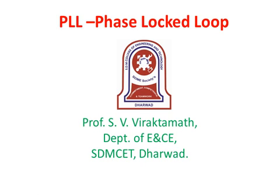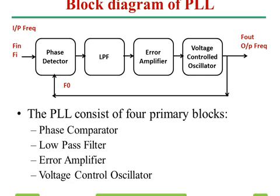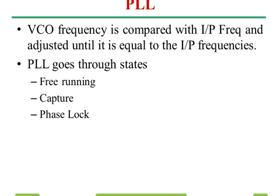Now we discuss about the PLL, phase locked loop. Based on the phase difference, it gives the voltage which is passed through the loop pass filter and then it is amplified and given to the voltage controlled oscillator, so that F0 will be adjusted to the FN. PLL goes through three states: free running, capture, and phase lock.